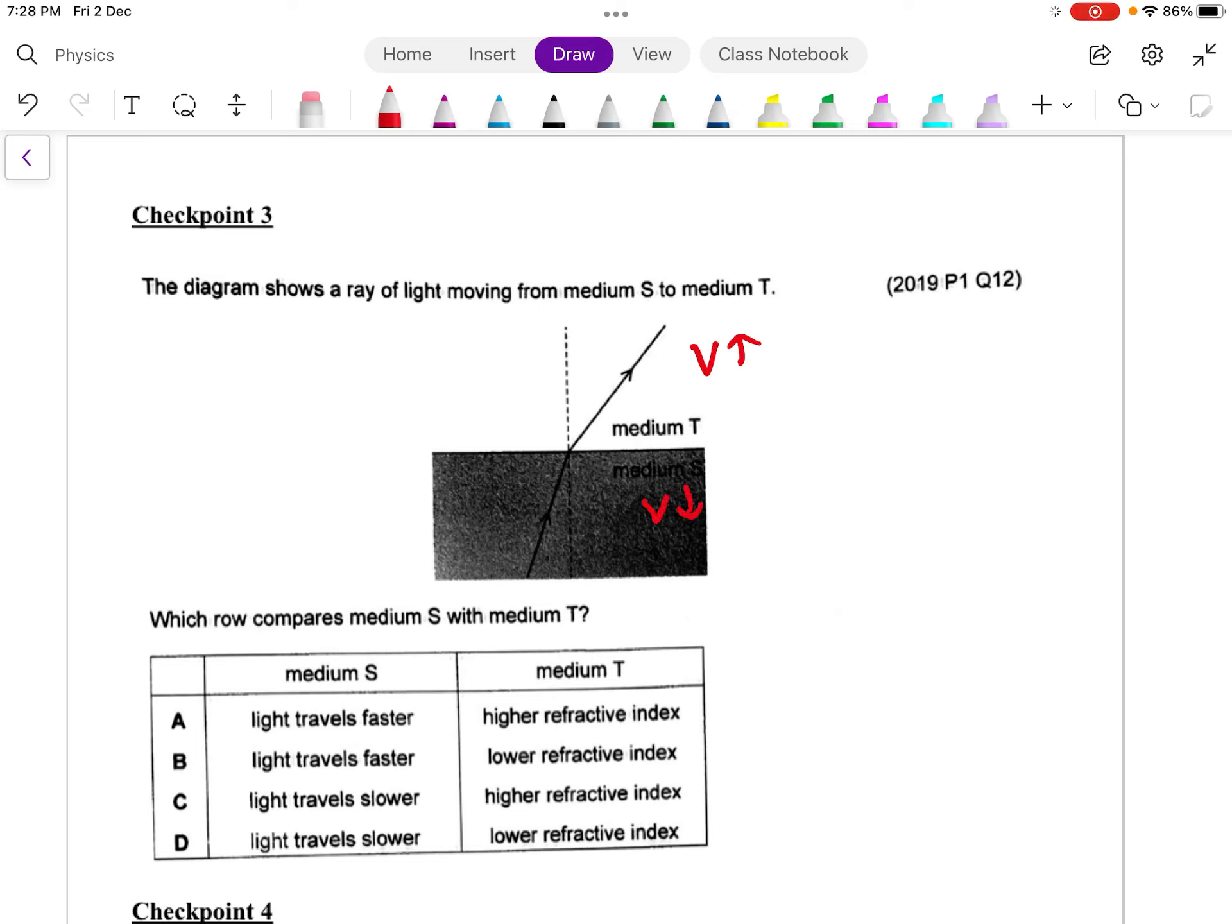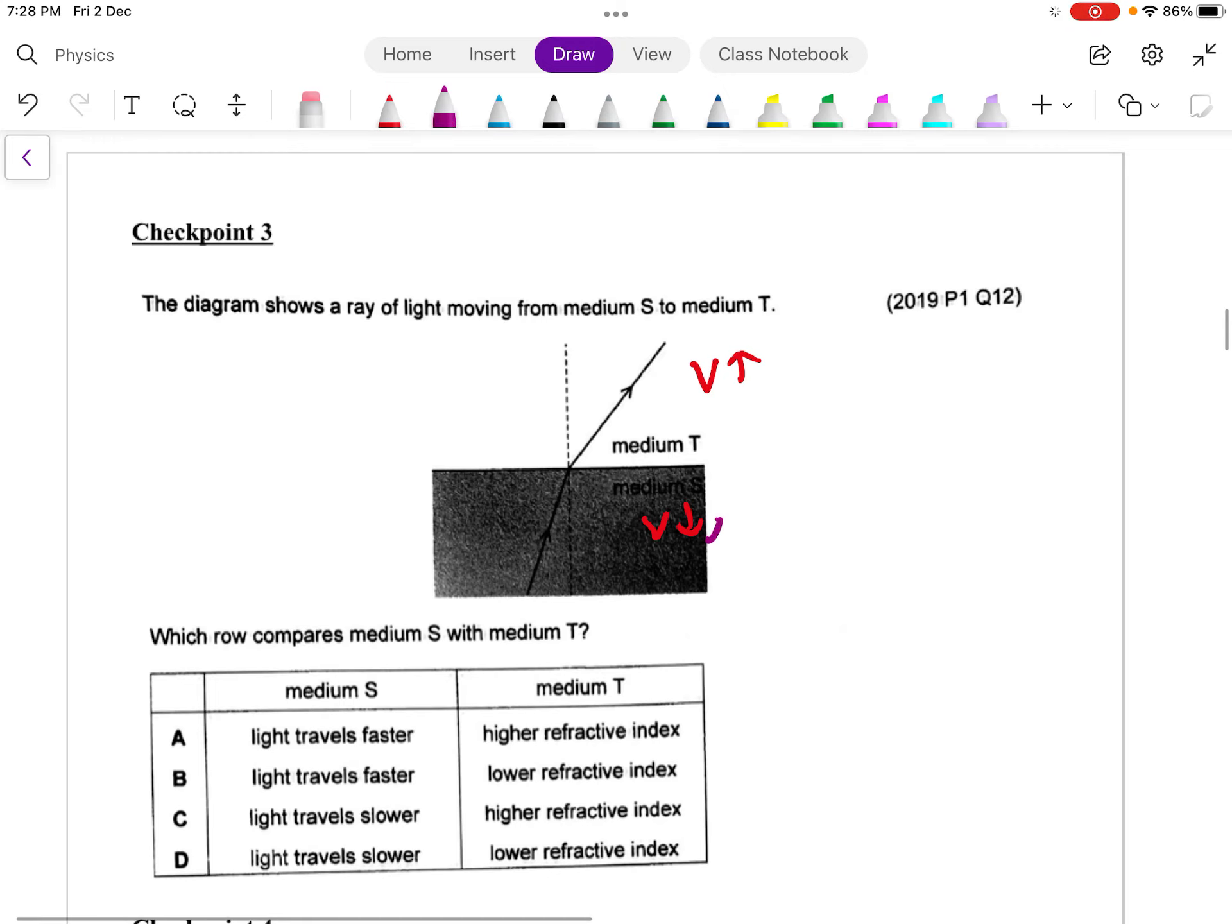So the next thing is, let's talk about the refractive index of S and T. Since in S you are slower, means that the refractive index is higher. For medium T, you are faster, so the refractive index should be smaller. Okay, so let's take a look at all the different options.